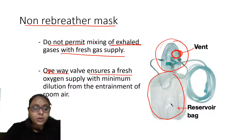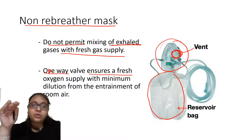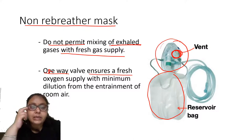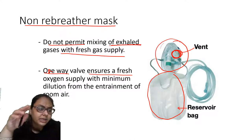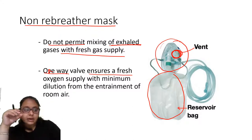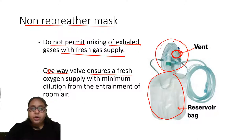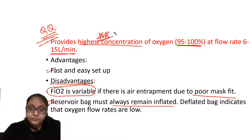Advantages: fast and easy setup. Disadvantages: FiO2 is variable if there is air entrapment due to poor mask fit. The reservoir bag must always be inflated — if it is completely deflated, it means oxygen flow rates are low and should be increased. The non-rebreather mask with reservoir bag provides the highest concentration of oxygen: 95–100% at a flow rate of 6–15 liters per minute.